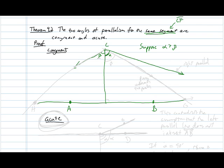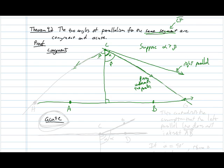If angle alpha is bigger than beta, that means we could draw a line on this side so that the angle here is equal to beta. Since beta is smaller than alpha, we can construct this line inside the angle. Because this is the right parallel, and this line passes underneath the parallel, this line must intersect line AB.